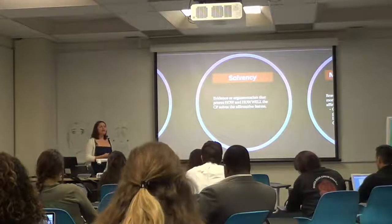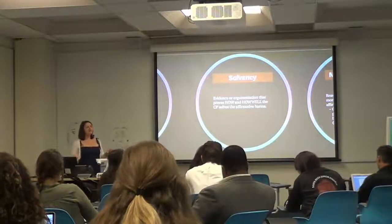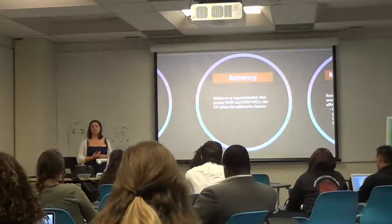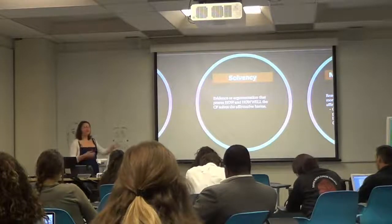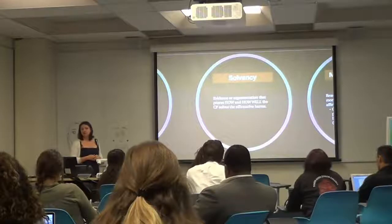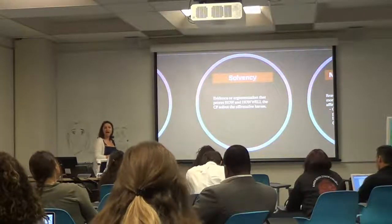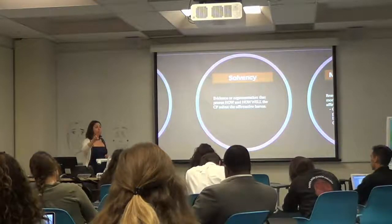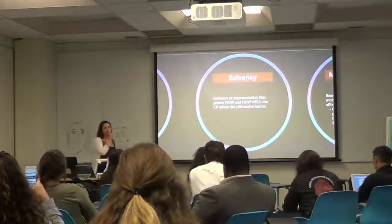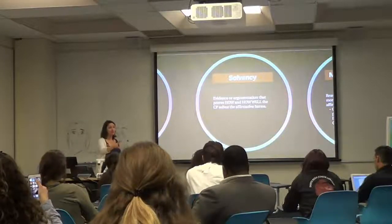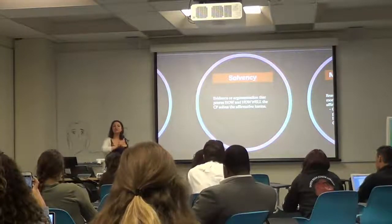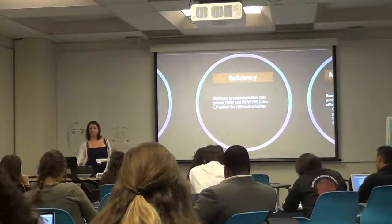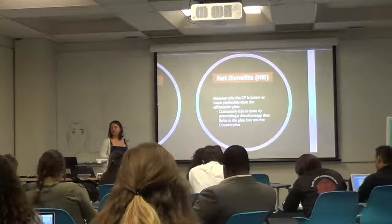Just like an affirmative plan, you also have to offer solvency arguments. In LD and policy debate, these come in the form of pieces of evidence. In parli debate, these come in the form of warrants or offering specific evidence and examples where this counter plan has either solved in the past or people who claim it will solve in the future. This answers the how question: how the counter plan, one, solves the affirmative, and two, avoids the disadvantage. You have to have both parts — how does the counter plan solve the affirmative, and how does the counter plan avoid the disadvantage that you are using as a net benefit?